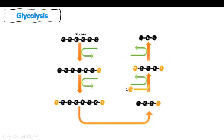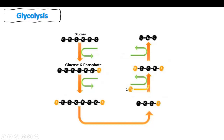We have six carbon atoms in glucose. We are going to represent the glucose molecule only by the number of carbon atoms, just to simplify the following reactions. First, when glucose arrives into the cell it is going to be converted into a new molecule. Comparing glucose with this new molecule, we have the same number of carbon atoms but there is a phosphate added.